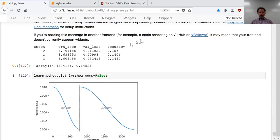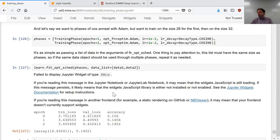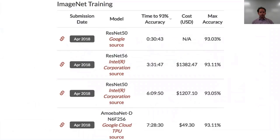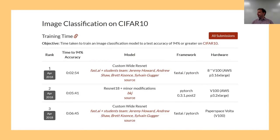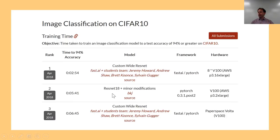Our CIFAR-10 results are also now up there officially. The previous best was a bit over an hour, and the trick here was using one cycle, basically. All this stuff in Sylvain's training phase API is really all the stuff that we use to get these top results. And another FastAI student, BKJ, took ResNet 18, added the concat pooling on top, and used Leslie Smith's one cycle — and so he's got on the leaderboard. All the top three are FastAI students, which is wonderful.